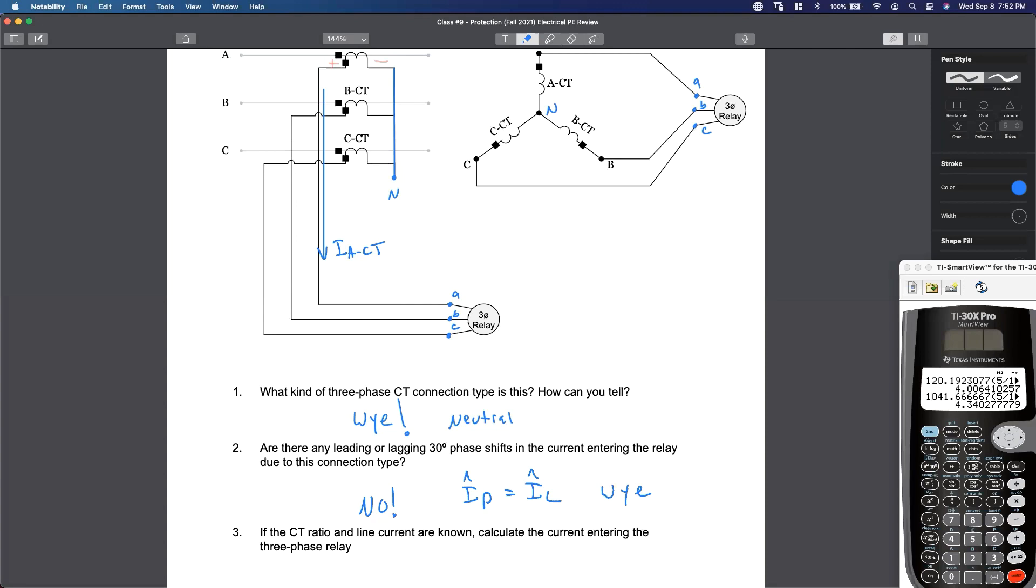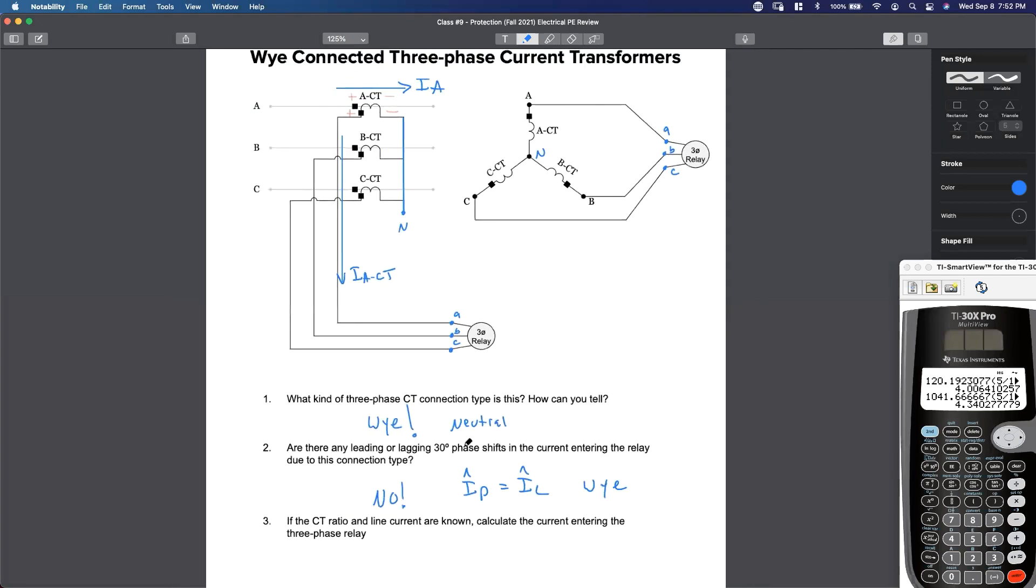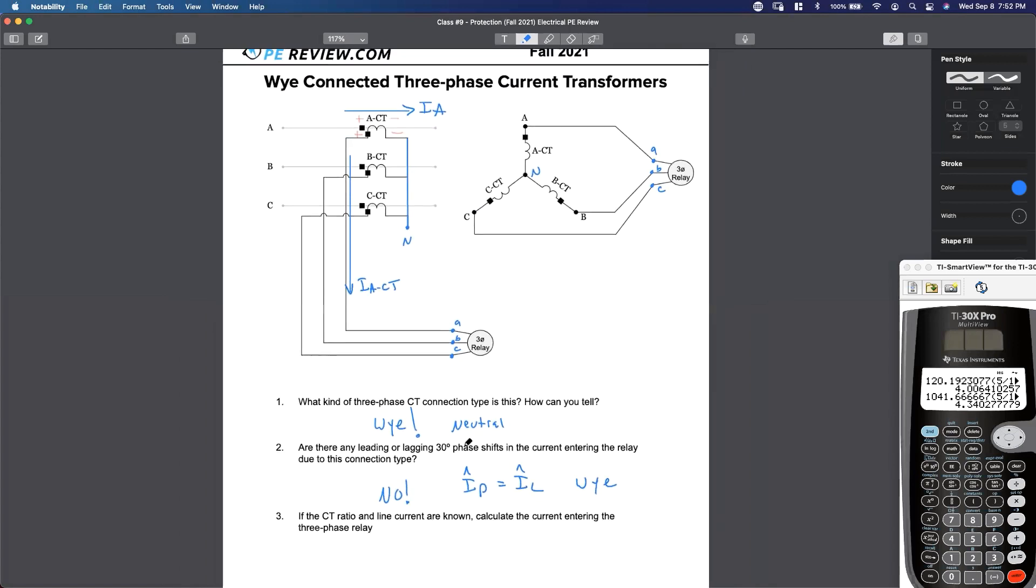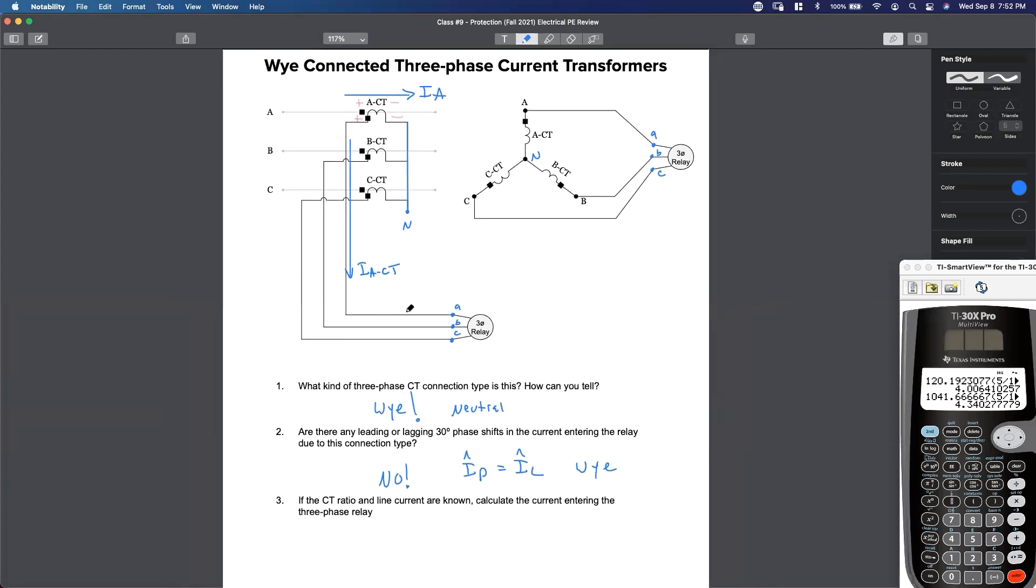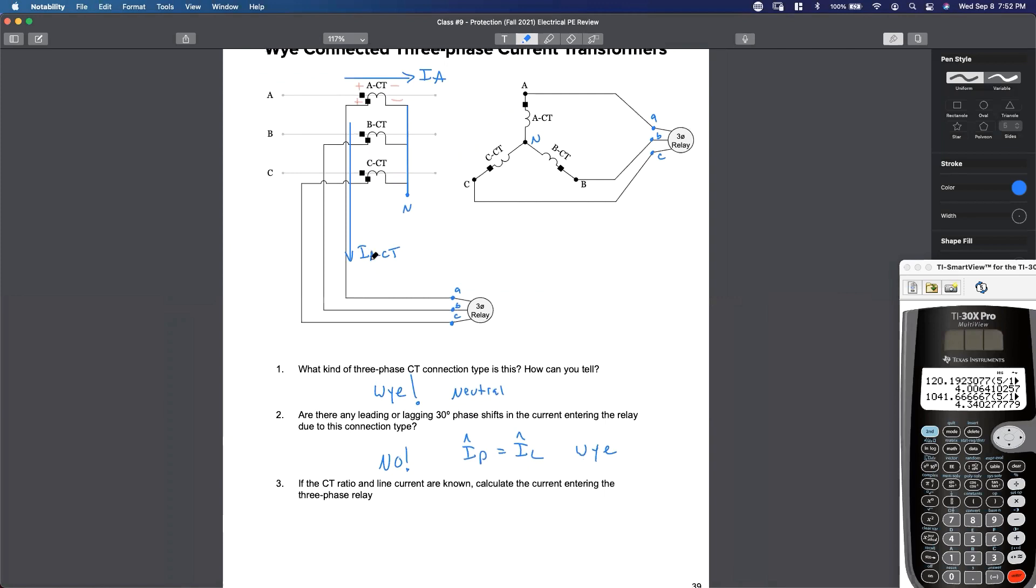All right, if the CT ratio and the line current are known, how do we calculate the current entering three-phase relay? How do I calculate I, A, CT, or how do I just calculate I, CT?